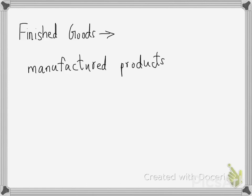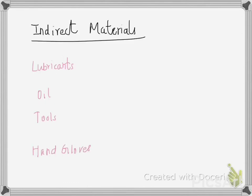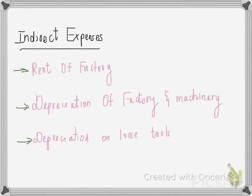Finished goods are manufactured products which are ready to be sold. Work in progress are semi-finished goods waiting for completion. These — finished goods and work in progress — are types of inventory. Under indirect materials come things such as lubricants, oil, tools, fans, and gloves, which don't directly link with the product.